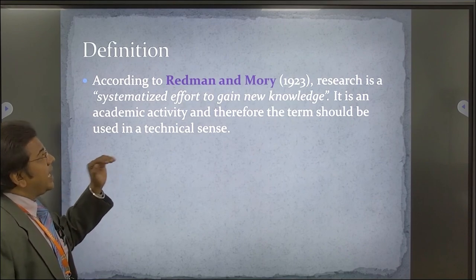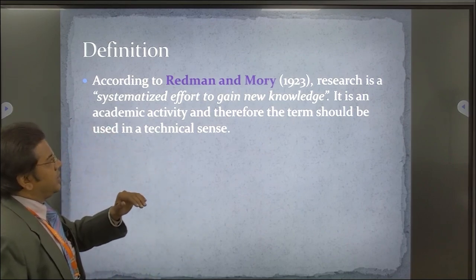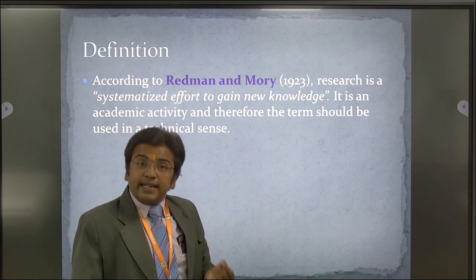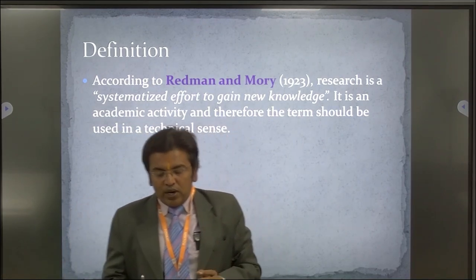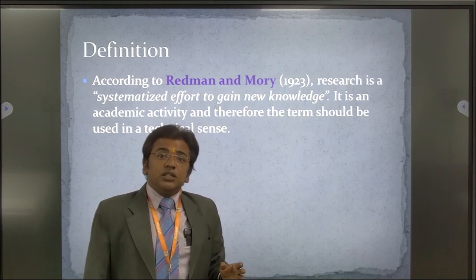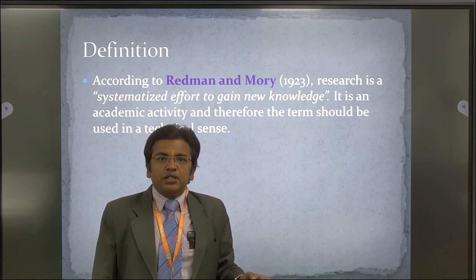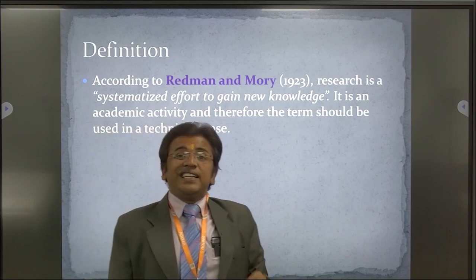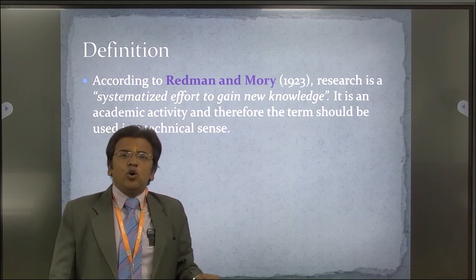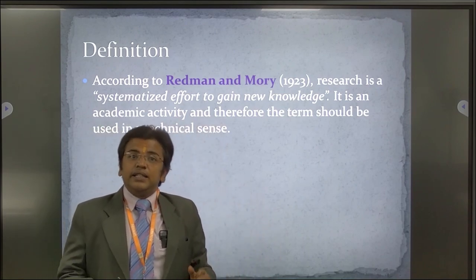According to Redman and Morey in 1923, research is a systemized effort to gain new knowledge. It is an academic activity and the term should be used in a technical sense. For example, if you say that India's chances of winning the World Cup are 70%, you have to prove this on technical grounds — calculating the percentage of wins, percentage of losses, the countries they play against — and according to probability, calculate what the chances are of India winning.